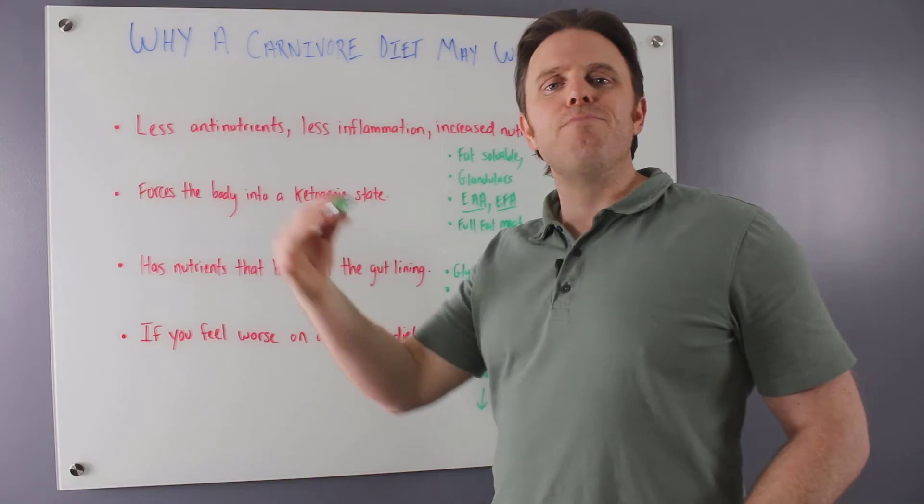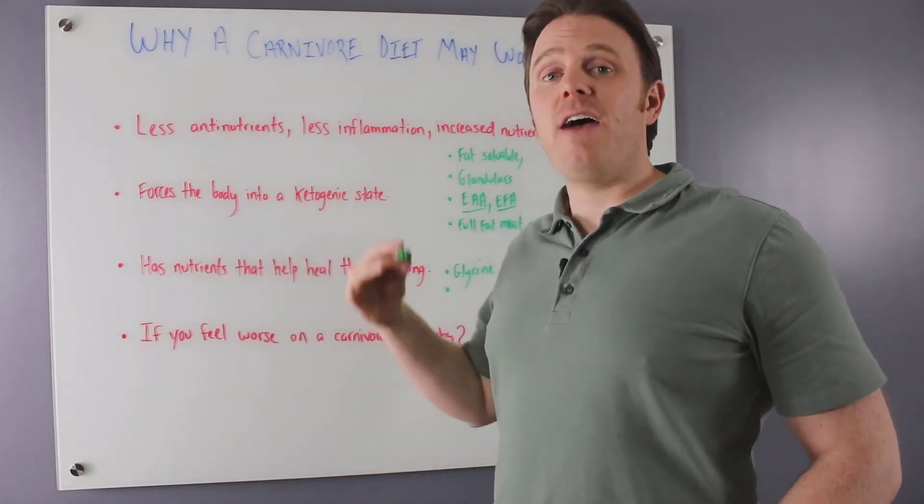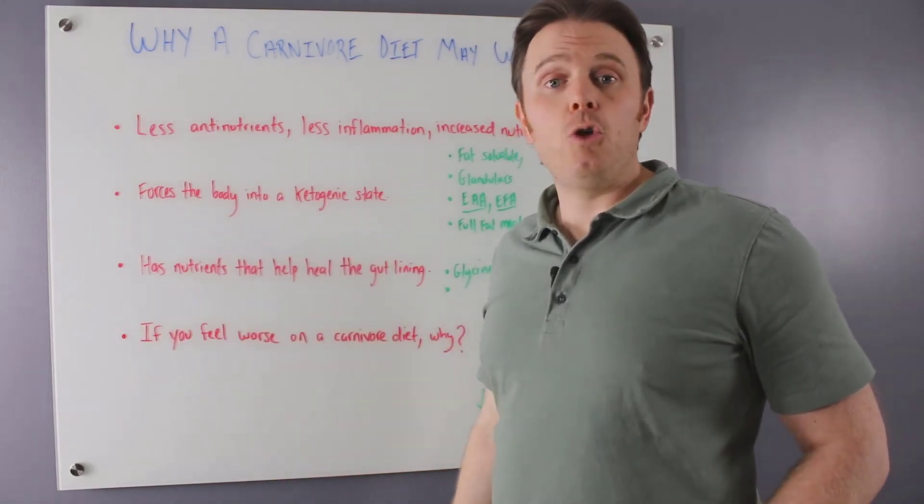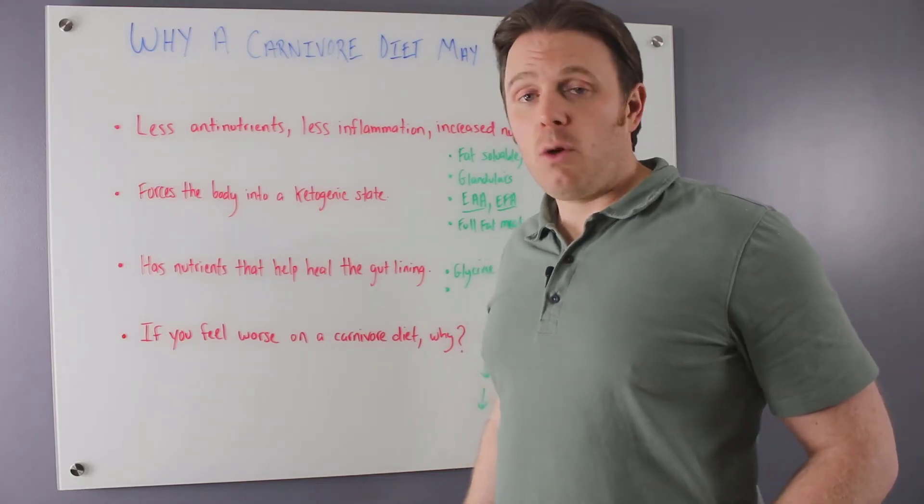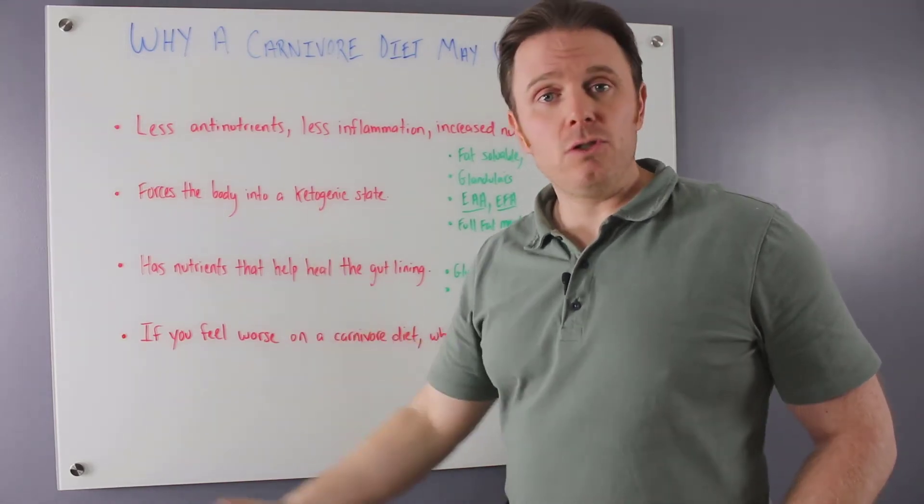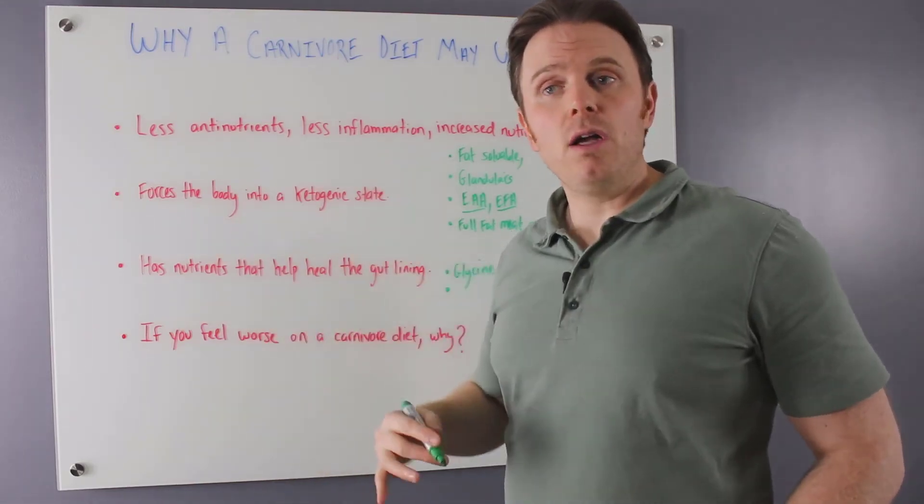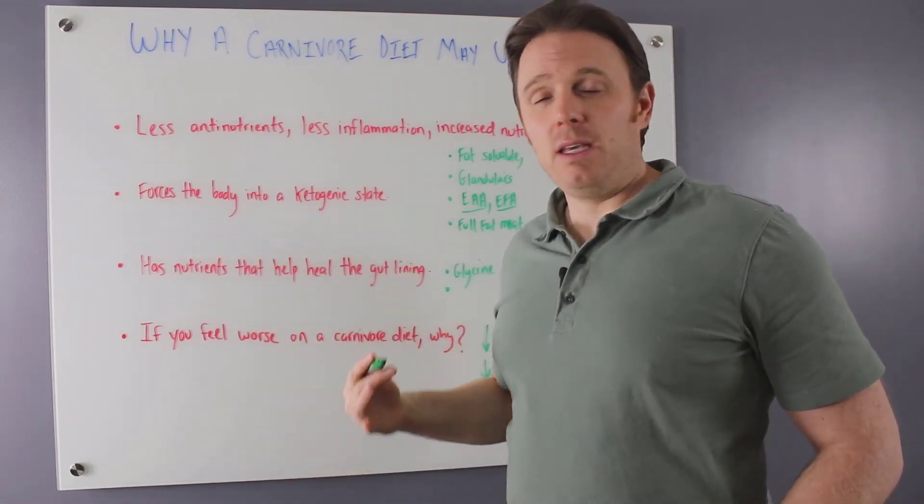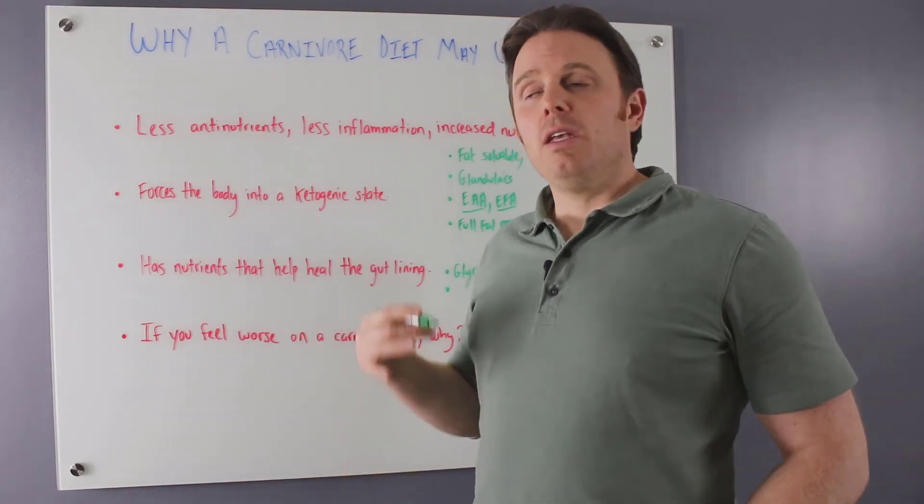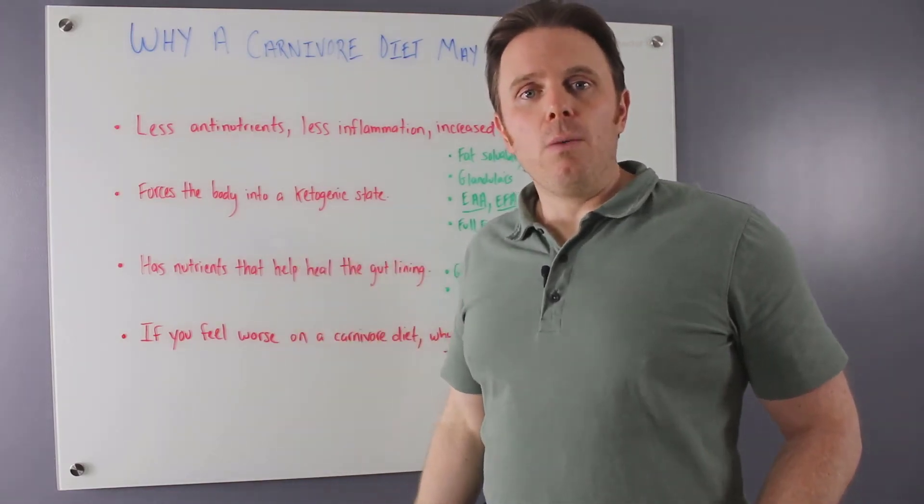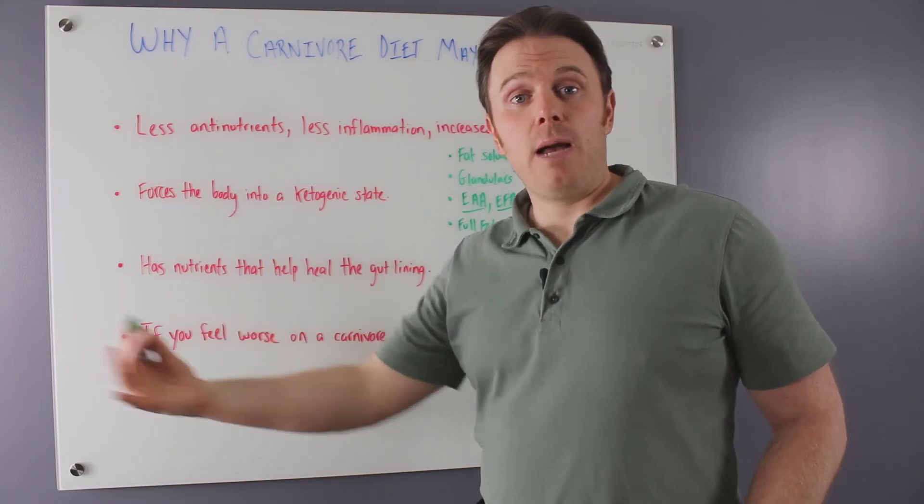So who does better on a carnivore diet? Well, if you have a known autoimmune disease, it's always good to at least give it a try. If you have a known autoimmune condition, irritable bowel disease, Crohn's disease, ulcerative colitis, which kind of fall into that umbrella, vitiligo, it could be MS, Parkinson's, right? These are things that are going to be very helpful to look at trying or at least implementing them for a period of time.